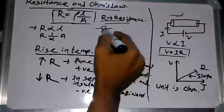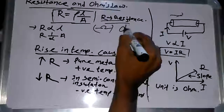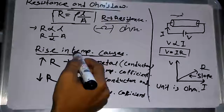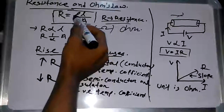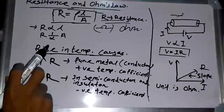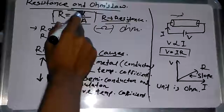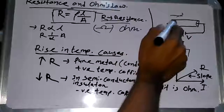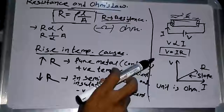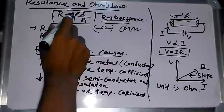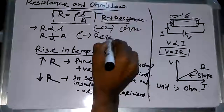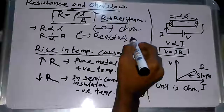The unit of resistance is ohm — this is its symbol. Resistance is given by the formula R = ρL/A, where ρ (rho) is the resistivity of the material, L is the length of the conductor, and A is the cross-sectional area of the conductor. Resistivity ρ is measured in ohm-meter.